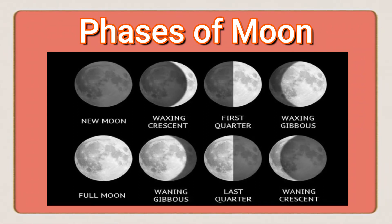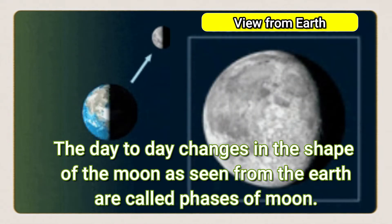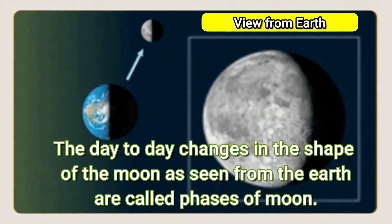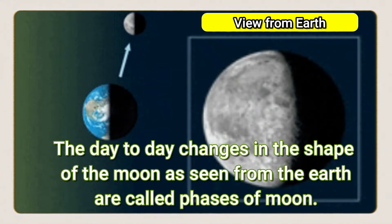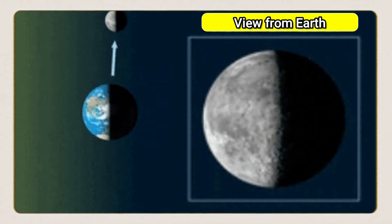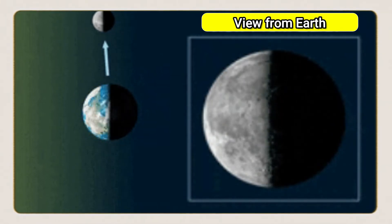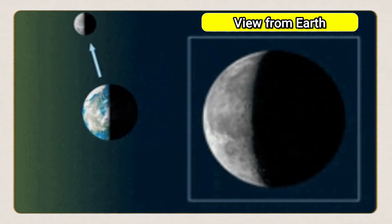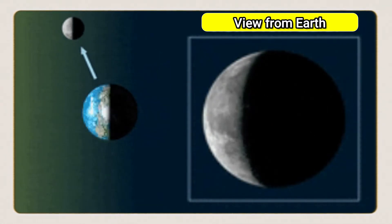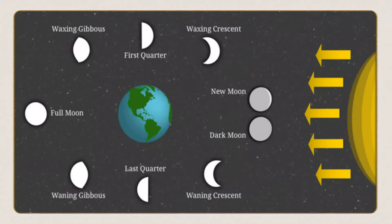Hello everyone, welcome to you all. In this video we are going to learn about the phases of the moon. The day-to-day changes in the shape of the moon as seen from the earth are called phases of moon. The moon does not really change its shape, but due to the revolution of the moon around the earth, its position with respect to earth changes, so the moon appears in different shapes.